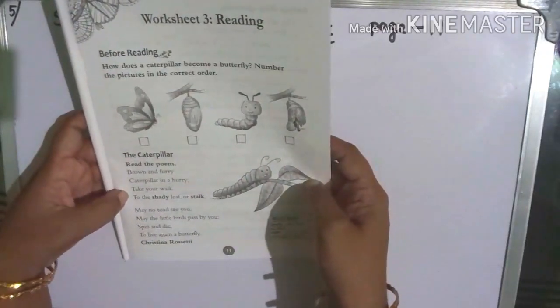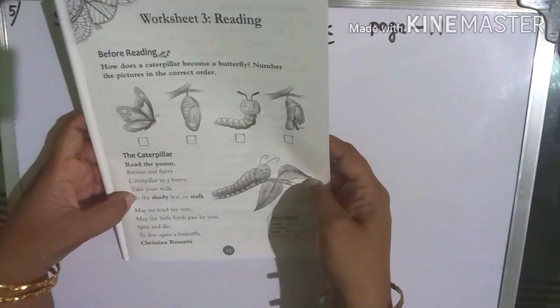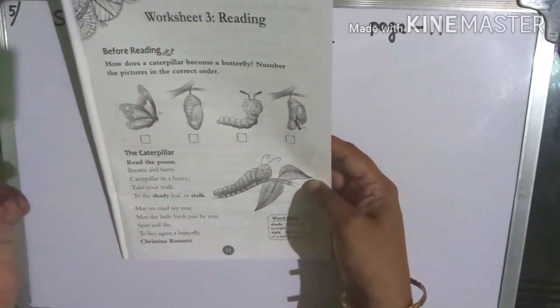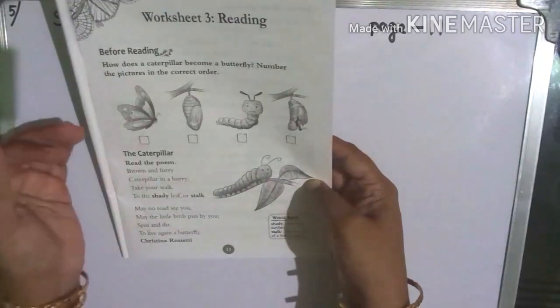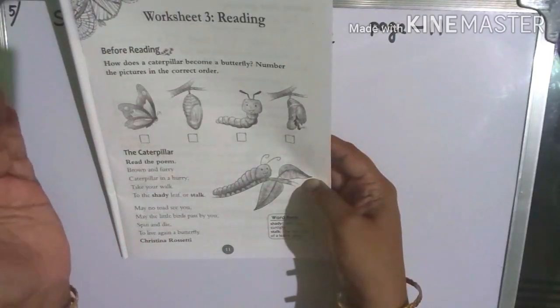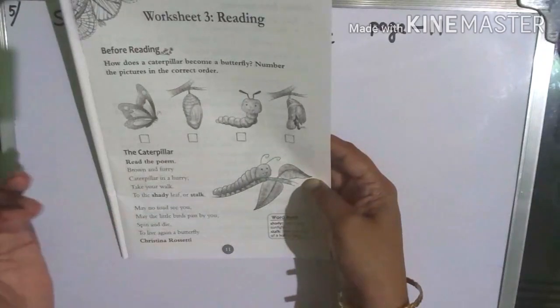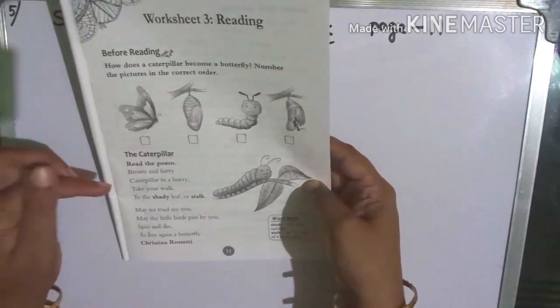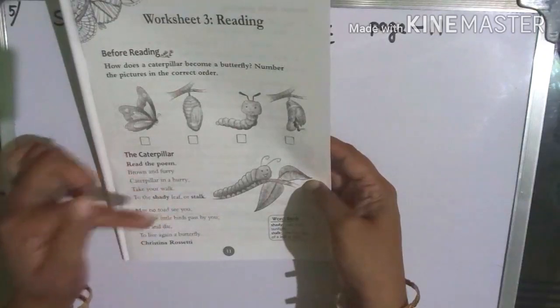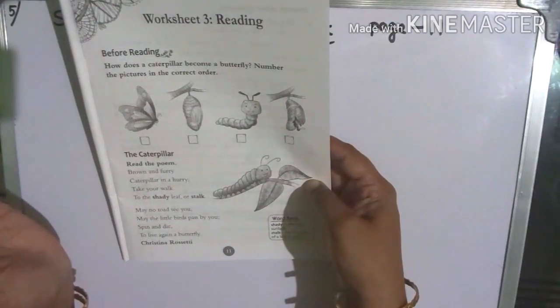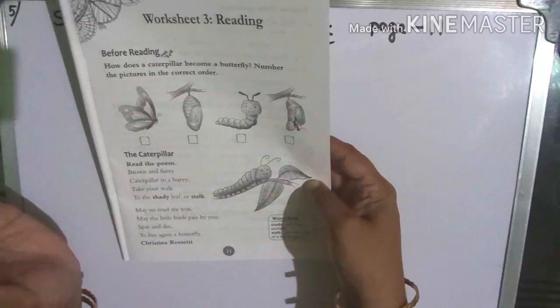Moving slowly to the shady leaf or stalk. Where is it going? Save from sunlight - word 'shady'. Where sunlight won't come, some leaf place, or stalk means the thin stem of a leaf or plant, a thin branch where there is a leaf.